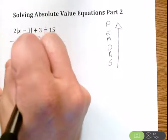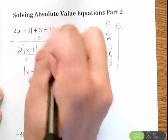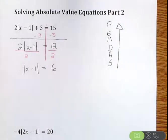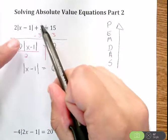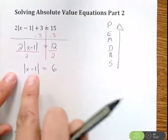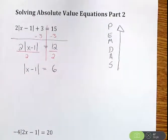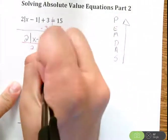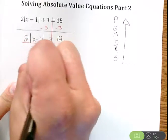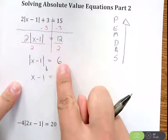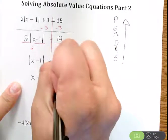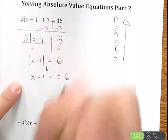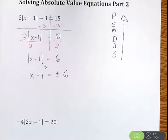So then I have absolute value of x minus 1 equals 6. And just like that, by removing the 3 and removing the 2, this is looking awfully similar to the type of equations we're solving in part 1. So now all that's left is the absolute value. To get rid of it, we do x minus 1, but then we take the right side and let's put a plus or minus on it. So then we get plus or minus 6.